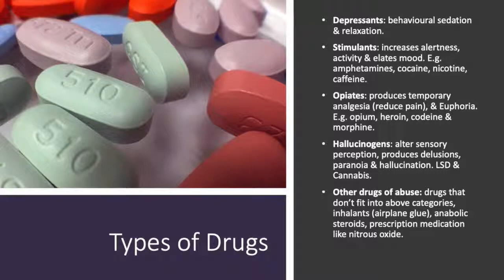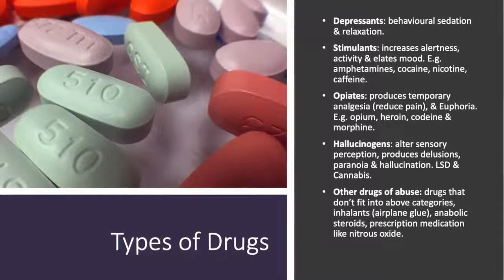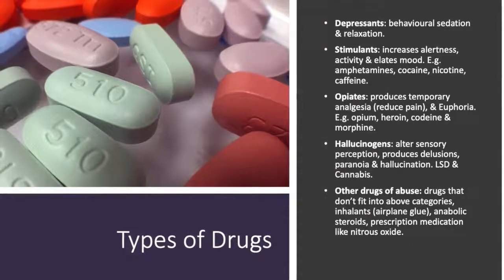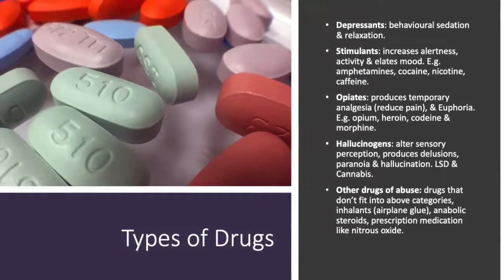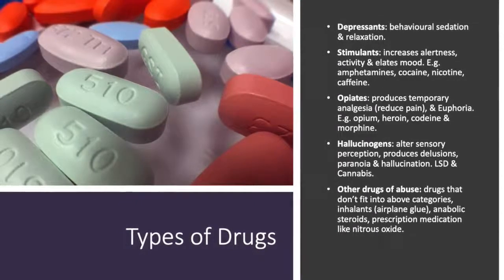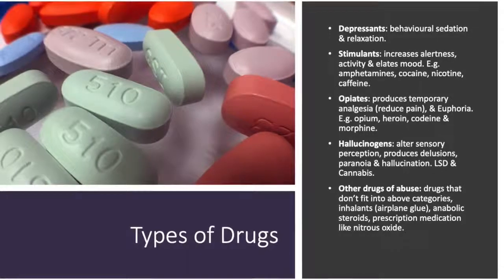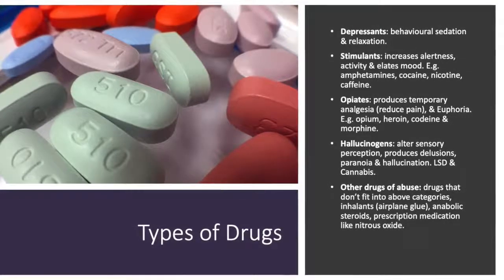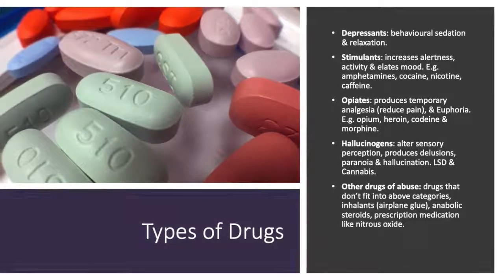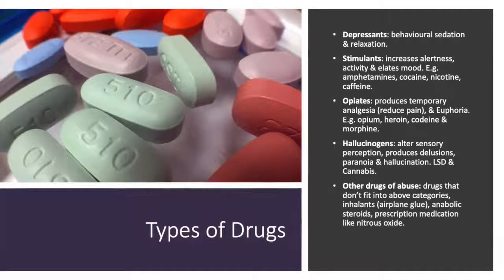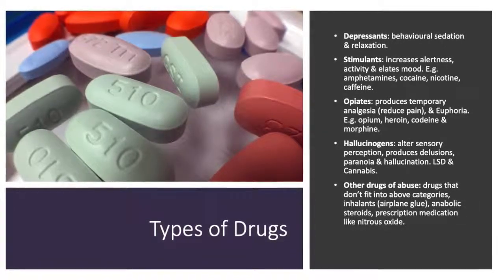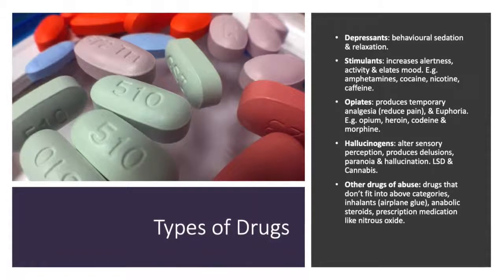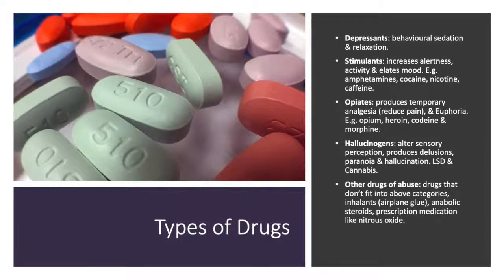Now I'll be talking about the types of drug substances. Depressants cause behavioral sedation and relaxation, and can include substances like alcohol. Stimulants increase alertness, activity, and elate mood — for example, amphetamines, cocaine, nicotine, and caffeine are all stimulants. Opiates produce temporary analgesia, which reduces pain and brings about euphoria; examples include heroin, codeine, and morphine. Hallucinogens alter sensory perceptions and produce delusions, paranoia, and hallucination — they include LSD and cannabis. Other drugs of abuse include inhalants such as airplane glue, anabolic steroids, or prescription medications like nitrous oxide.